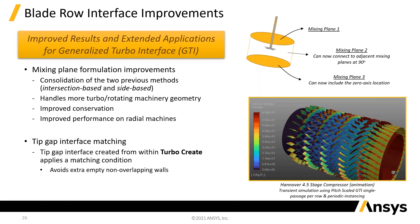A lot of turbomachinery functionality is now being moved into Fluent. Basic to that is having a good interface between rotating and non-rotating areas and a good mixing plane model. Previously, there were different mixing plane models depending on whether you were radially or axially related to the impeller. There has now been a lot of improvement to consolidate those, improve conservation across them, and improve performance for radial machines.